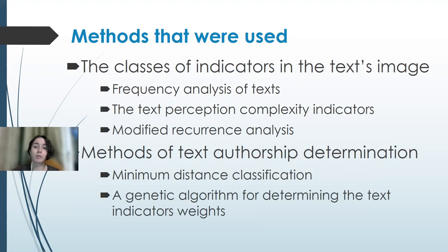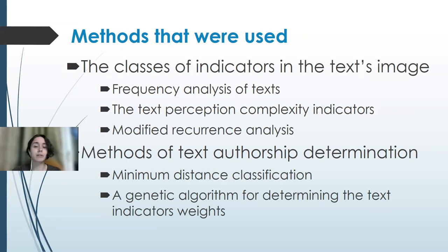Regarding the methods used in our research: we use three methods to create the text image, which is a vector containing indicator measurements of the following classes — frequency analysis of text, text perception complexity, and modified recurrence analysis. We also have two methods to determine authorship: minimum distance classification, and a genetic algorithm for determining text indicator weights.